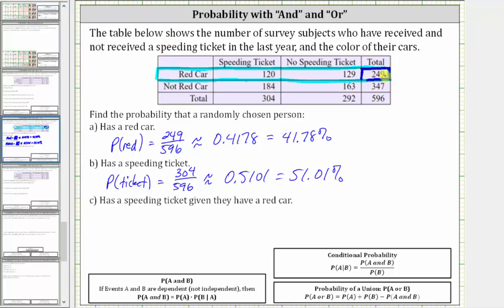And we're trying to find the probability a randomly chosen person has a speeding ticket given they have a red car. So those that have a red car, notice 120 of them received a speeding ticket. And therefore the probability a randomly chosen person has a speeding ticket given they have a red car is 120 divided by 249.